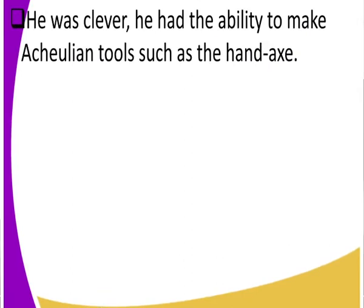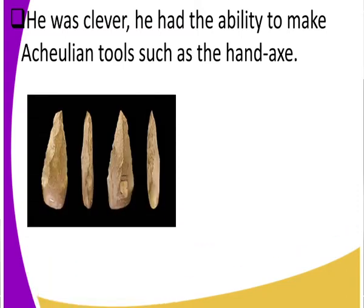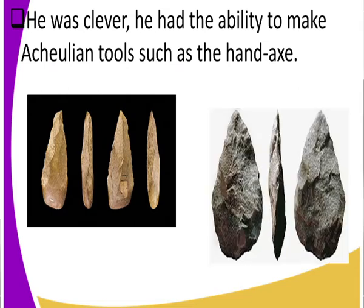What tools did Homo erectus make? He was a little bit cleverer compared to the other evolutionary stages. Through that, he was able to make tools we call Acheulean tools. These include the hand axe. They were made out of stone and they were also very sharp. Those were the Acheulean tools. That is the reason man was very clever compared to the other evolutionary stages.